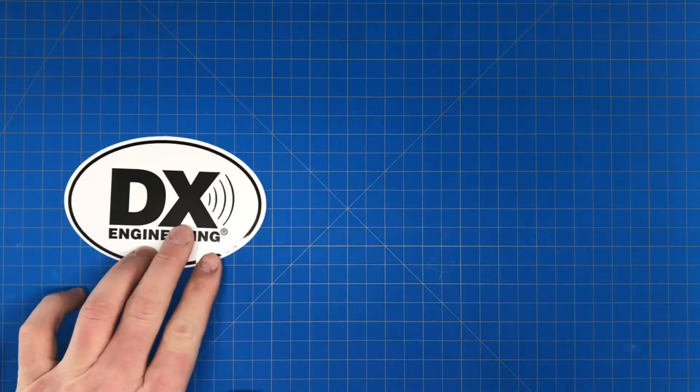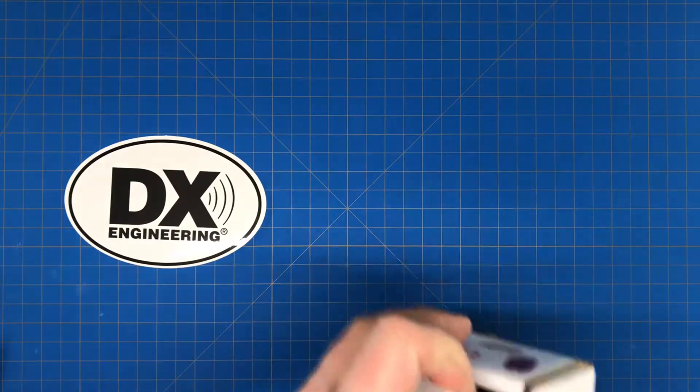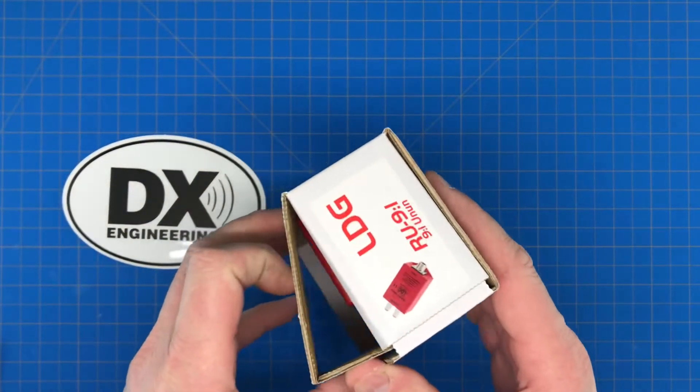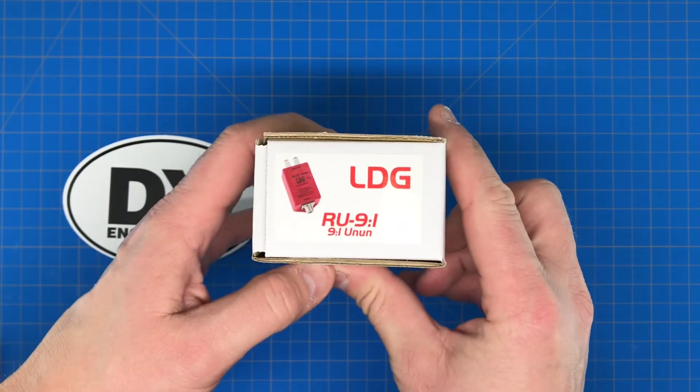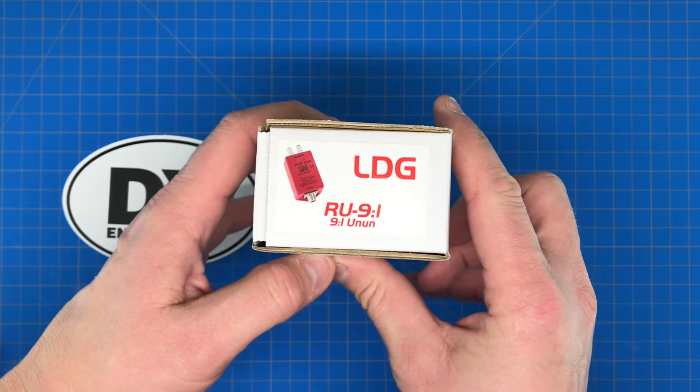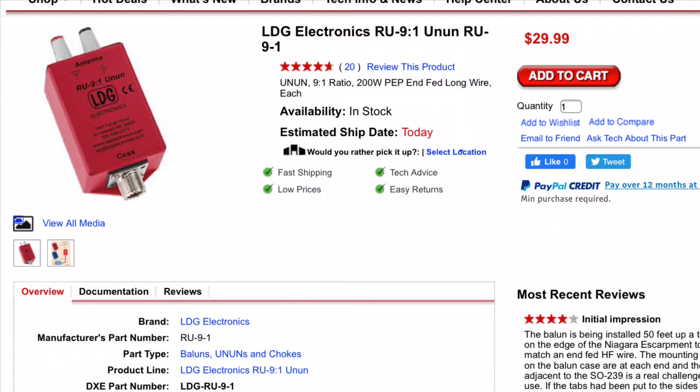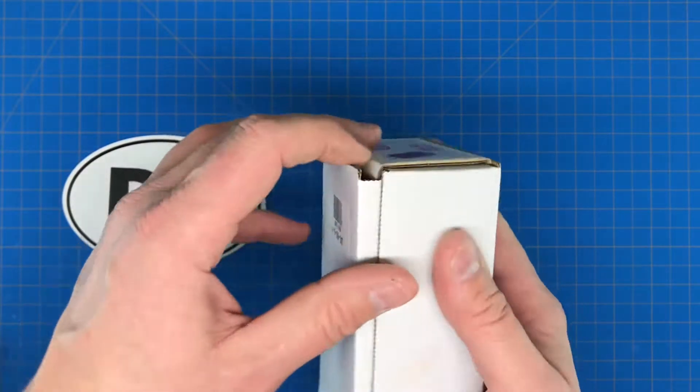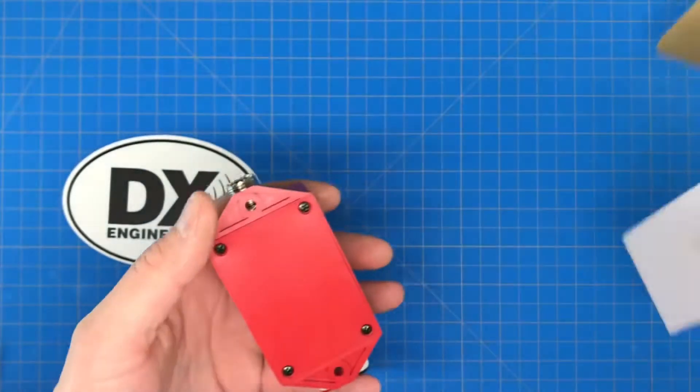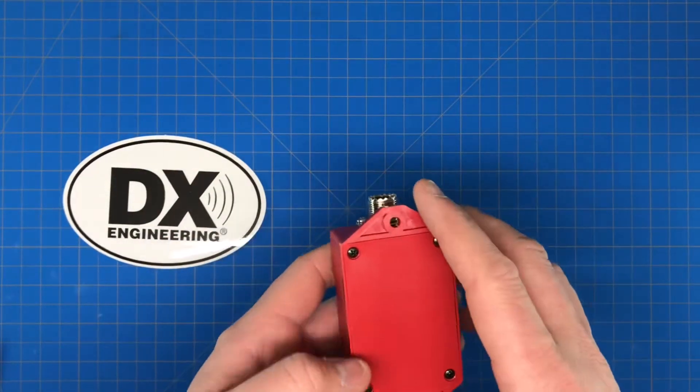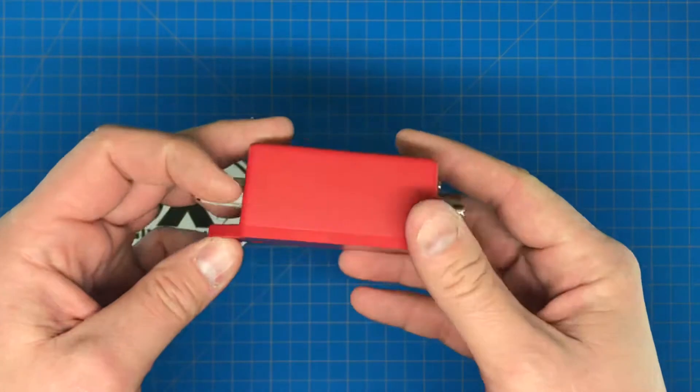Okay, the UPS man just delivered a package from DX Engineering. I went ahead and picked up an LDG RU 9:1, the 9 to 1 unun, and I plan to use this for lunchtime on the air with the G90.